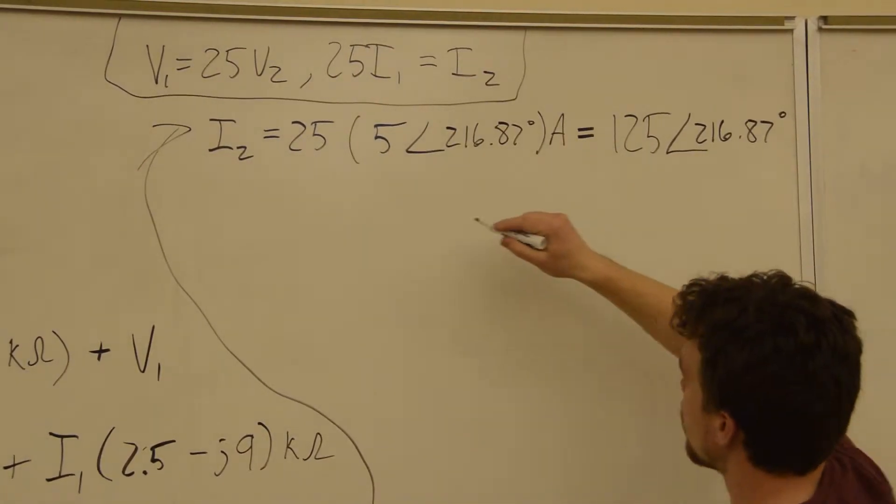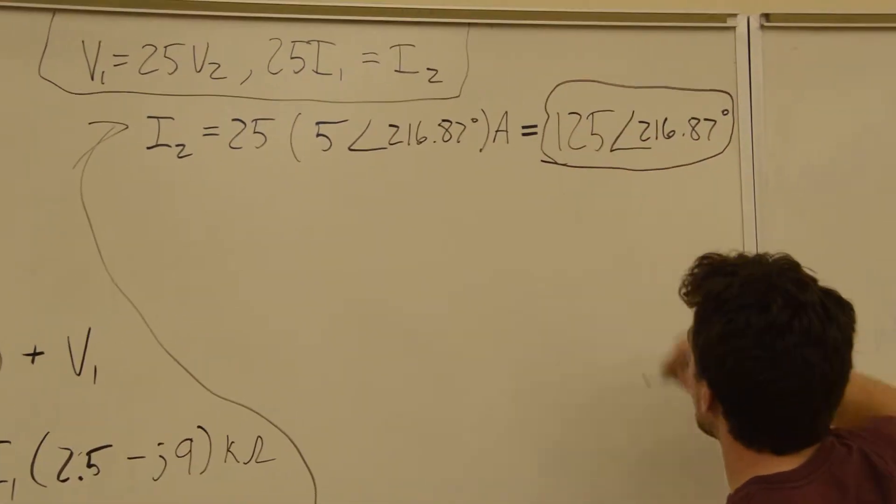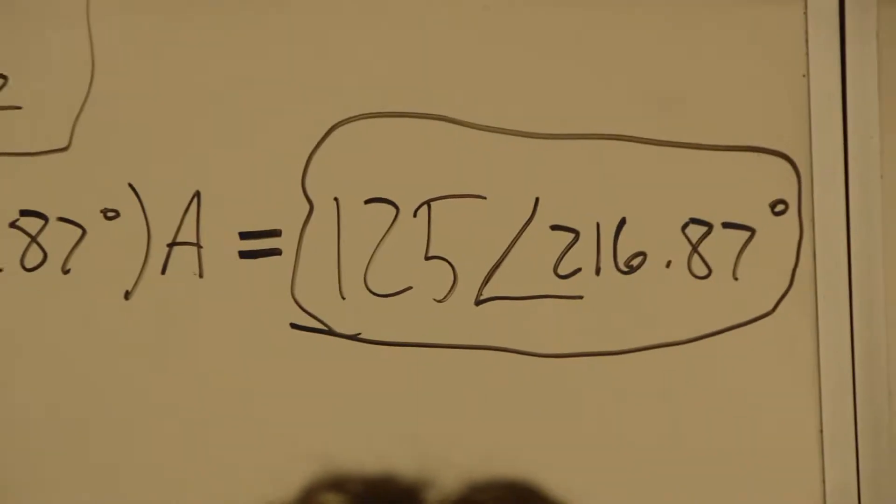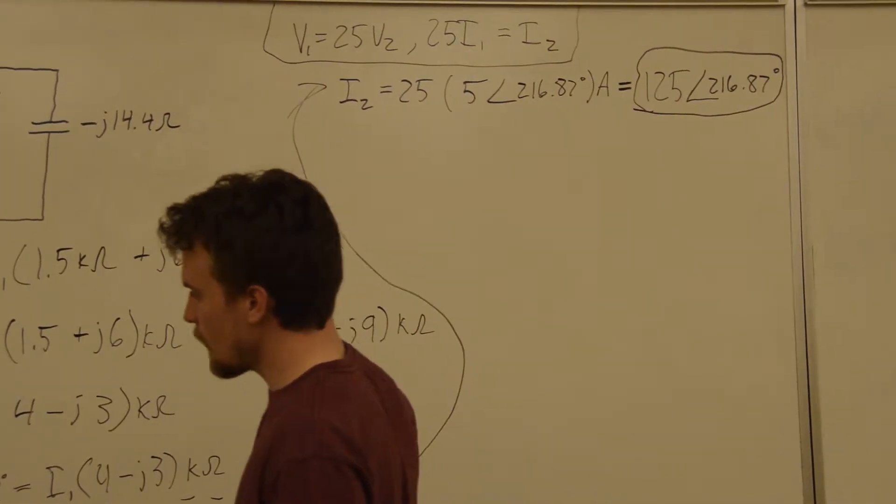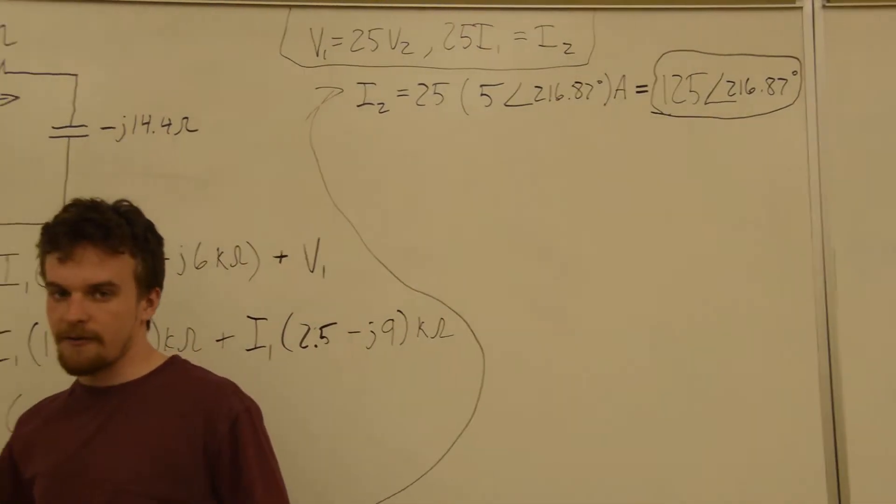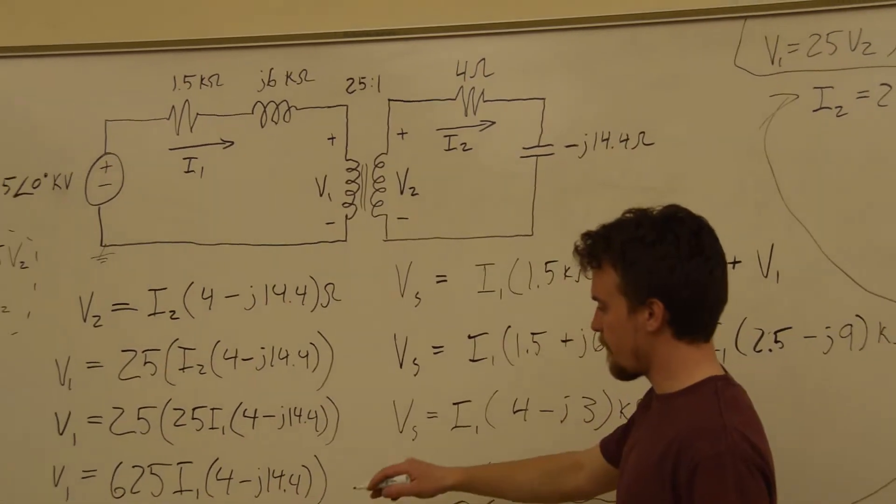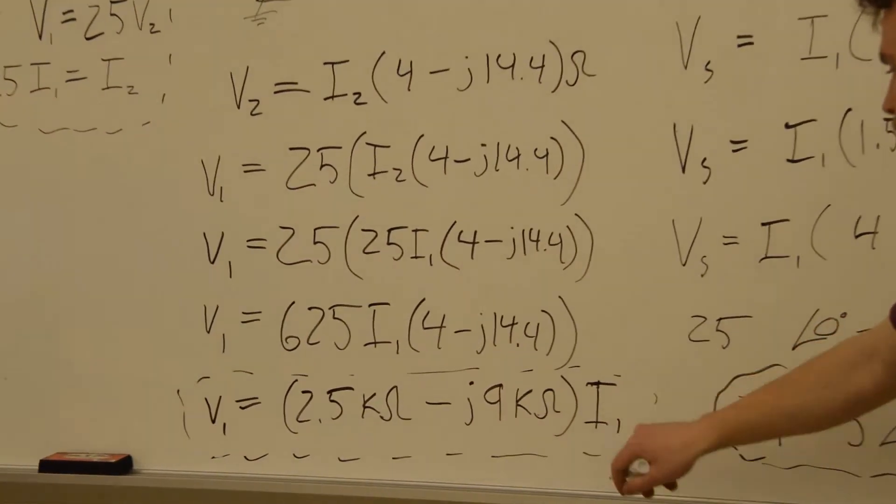Okay, so now this is a value of I2. That's the value of I2. And let's see. We have an equation somewhere that says V1 is equal to 2.5 minus J9 kilo-ohms times I1.